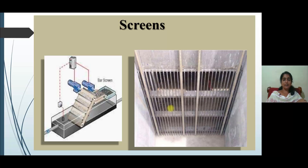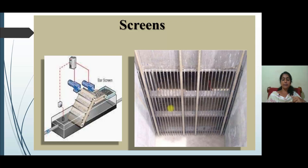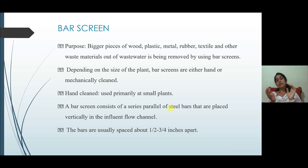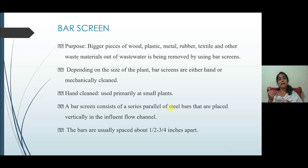This is the picture of a screen. The first one is a pictorial representation showing the screen provided at an inclination of 30 to 60 degrees, and the second one is a vertical screen. The bar screen is designed to remove bigger pieces of wood, plastic, metal, rubber, textile, or any other waste material from the wastewater. Depending upon the size of the plant, bar screens are either hand operated or mechanically operated.